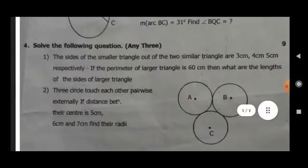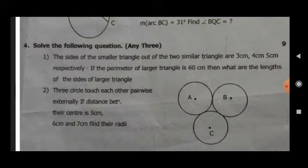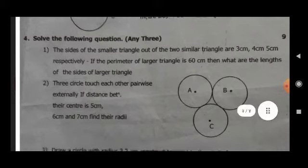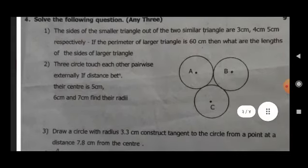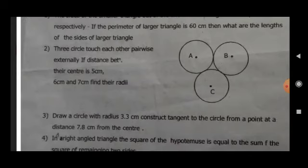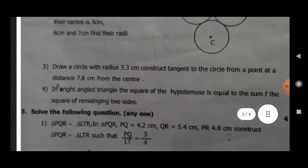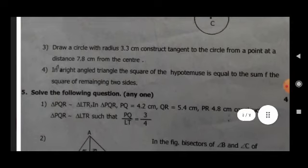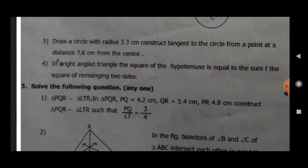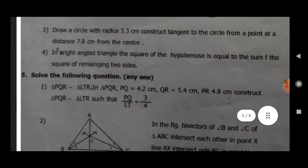Question 4, solve the following questions, any three. Nine marks at 3. First, the sides of the smaller triangle out of two similar triangles are 3 cm, 4 cm, 5 cm respectively. If the perimeter of large triangle is 60 cm, then what are the lengths of the sides of large triangle? Second, three circles touch each other pairwise externally. If distance between their centers is 5 cm, 6 cm, and 7 cm, find their radii. Third, draw a circle with radius 3.3 cm. Construct tangent to the circle from a point at a distance 7.8 cm from the center. Fourth, in a right angle triangle, the square of the hypotenuse is equal to the sum of the squares of the remaining two sides.